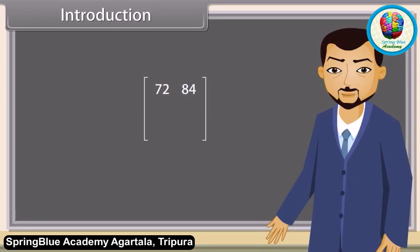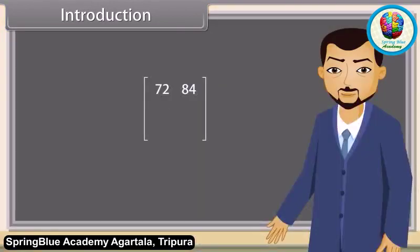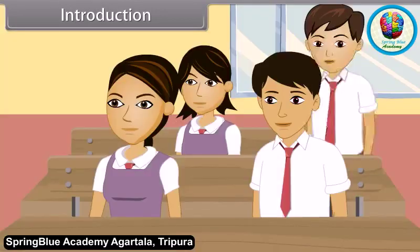Shraddha, now you tell me, how much did you score in science and maths? Teacher, I scored 86 in science and 85 in maths. 86 in science and 85 in maths. Prateek, you tell me now. Teacher, 67 in science and 72 in maths.